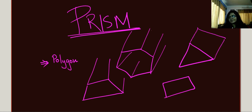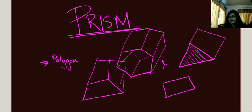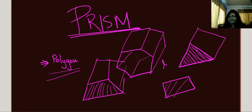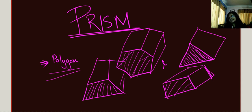So what is a prism? Any 2D polygon, if it is extended to a length L, we will get the corresponding prism. And based on which two-dimensional shape you are extending, the name of the prism will also be that. For example, if you are extending a triangle, then we call it a triangular prism. If it is a rectangle, then it will be a rectangular prism, which is also called a cuboid. If it is a hexagon, we call it a hexagonal prism.